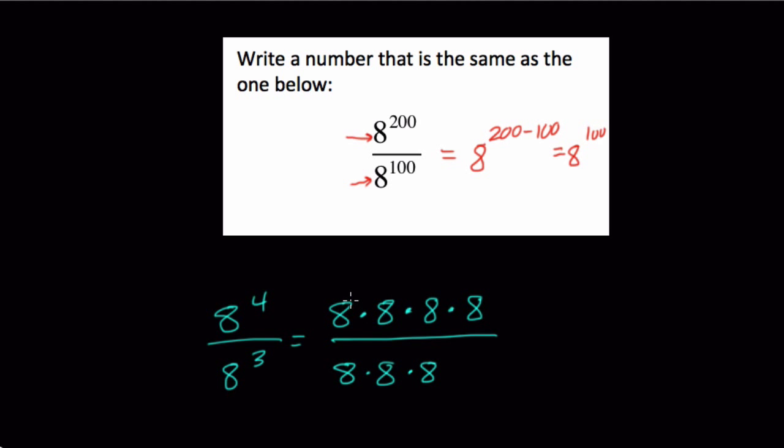Every pair of 8s that we divide cancel out to 1. So every 8 in the denominator subtracts or cancels out one of the factors in the numerator. So these cancel out, and so do these. These 3 8s down here essentially took away or subtracted the 3 8s that we're multiplying up here, leaving the 1 8 that's remaining.